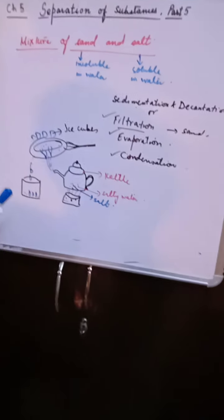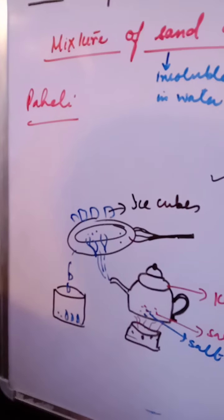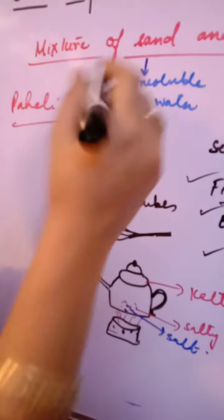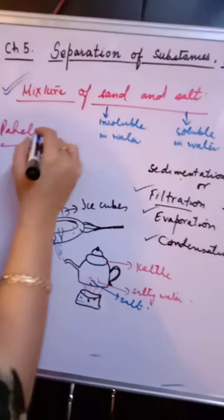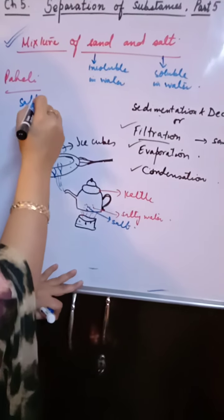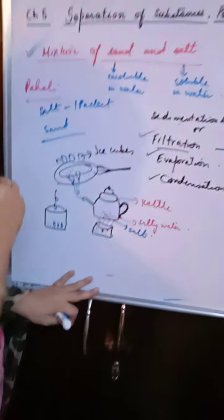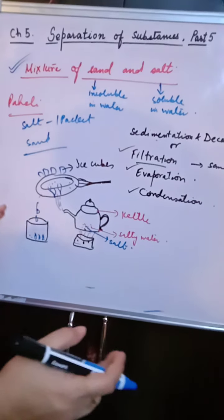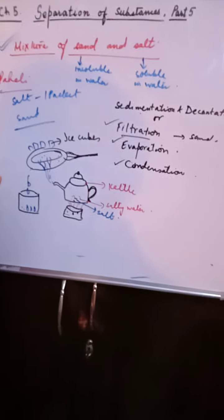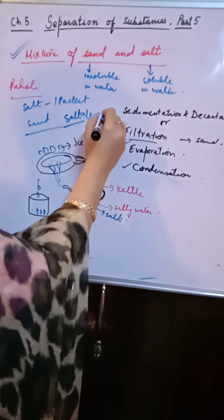Paheli mixed a packet of salt with a small amount of sand. When Paheli did the same activity with all the same steps, the salt she obtained was in a very small amount - obtained in less amount.